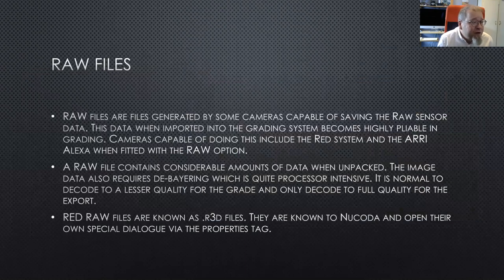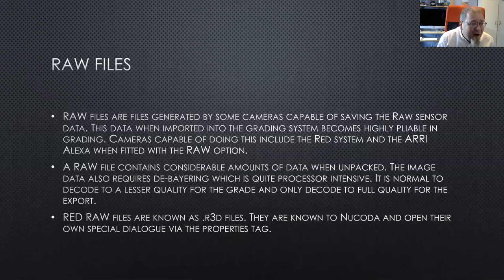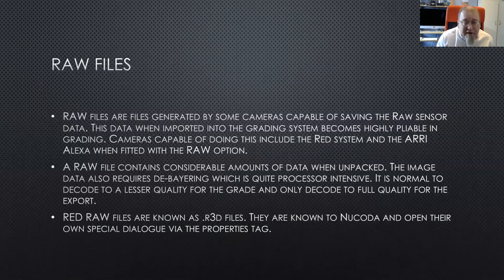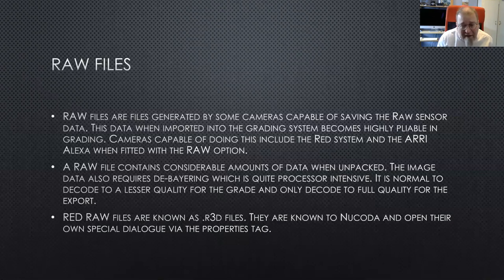Raw files are generated by cameras capable of saving raw sensor data. When imported into a grading system, this data becomes highly pliable. Cameras capable of this include the RED system and the Arri Alexa when fitted with the raw option. A raw file contains considerable amounts of data — I always refer to it as a Pandora's box. The image data also requires debayering, which is really processor intensive, so it's normal to decode to lesser quality for the grade and only decode to full quality for export. Red raw files are known as .R3D files.